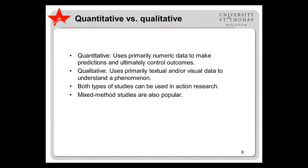When talking about action research, we usually differentiate between quantitative studies, which use primarily numeric data to make predictions and ultimately control outcomes, and qualitative studies, which use primarily textual and/or visual data to understand a phenomenon. Both types of studies can be used in action research. The choice of which method to use depends on the researcher's goals. Furthermore, mixed method studies that incorporate both quantitative and qualitative aspects are also popular in action research.